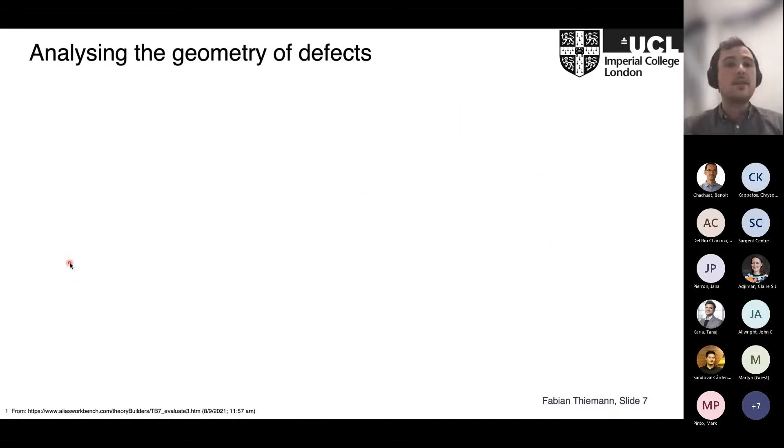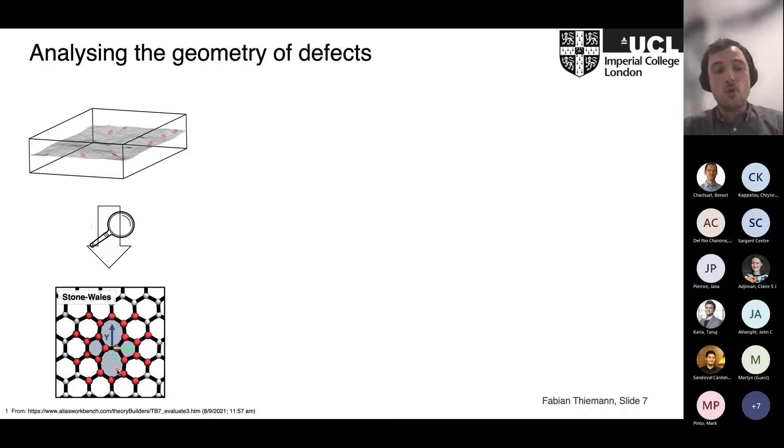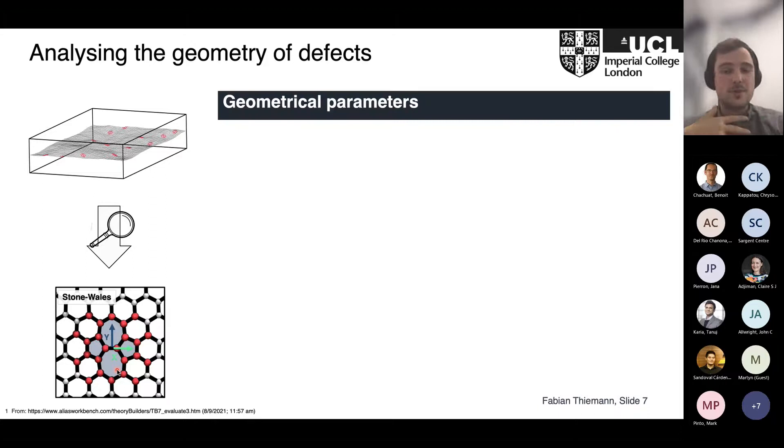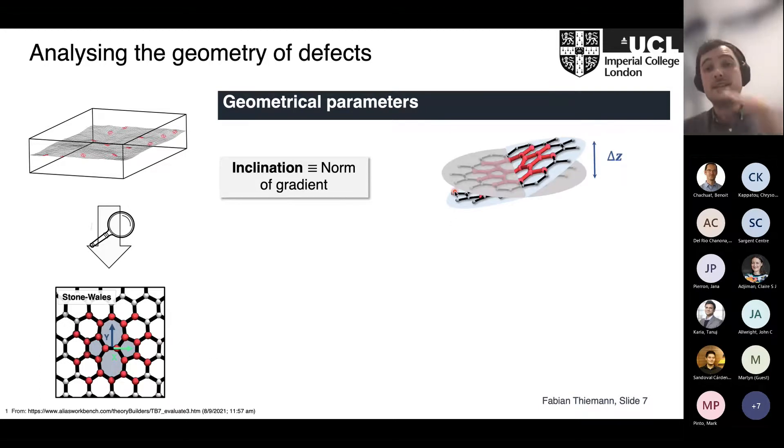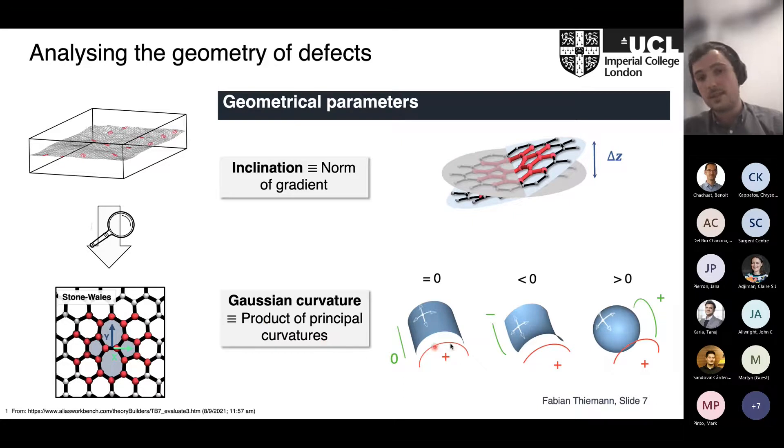We started analyzing the geometry of the defects in the local environments. The procedure works as follows: we take one frame from our simulation, identify the defect shown here in red, zoom in and look at the atoms forming this local environment or neighborhood, and then compute two geometric parameters. The first one is the inclination, which is just the norm of the gradient. You can imagine how much is this environment tilted, or how steep is it basically. The other thing is the Gaussian curvature, which is the product of the principal curvatures in your system. That can take a value of zero if one of the curvatures is zero, but it can also be positive for a sphere or negative for this kind of wrinkle shape when you have two opposite signs for your curvature.